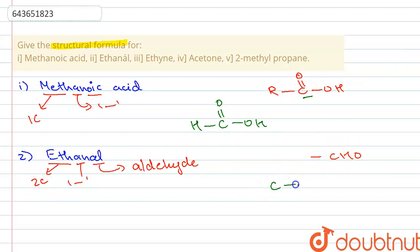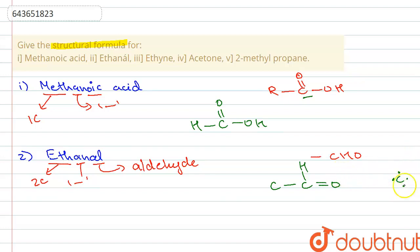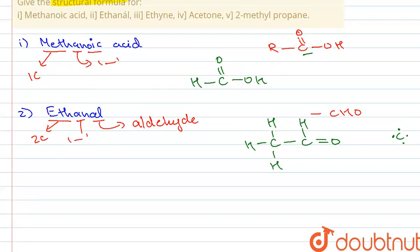The structure contains two carbon atoms including the carbonyl group, so we write carbon one and carbon two, with C=O at the end. A carbon atom has four electrons in its outermost shell, so all four must be involved in bond formation. One is already used in the double bond to oxygen, and the others are bonded with hydrogen. This is the structure of ethanal.